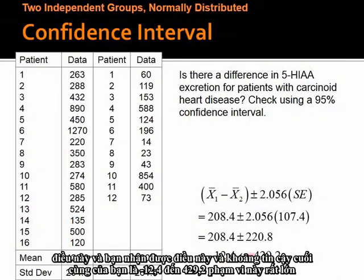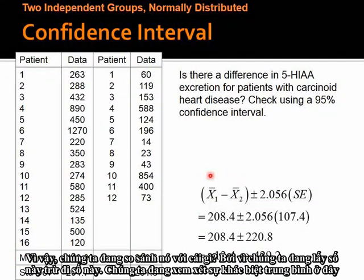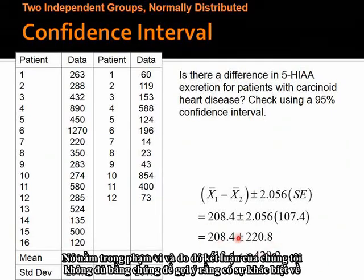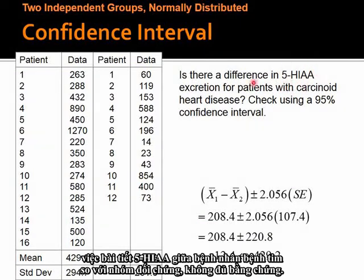This is a huge range. Because we're doing x-bar 1 minus x-bar 2, we're looking at the mean difference. If there's no difference, the mean difference should be zero. Is zero inside this range? Yes, it is. Therefore, our conclusion is: not enough evidence to suggest there is a difference in 5-HIAA excretion between patients with carcinoid heart disease versus the control group.